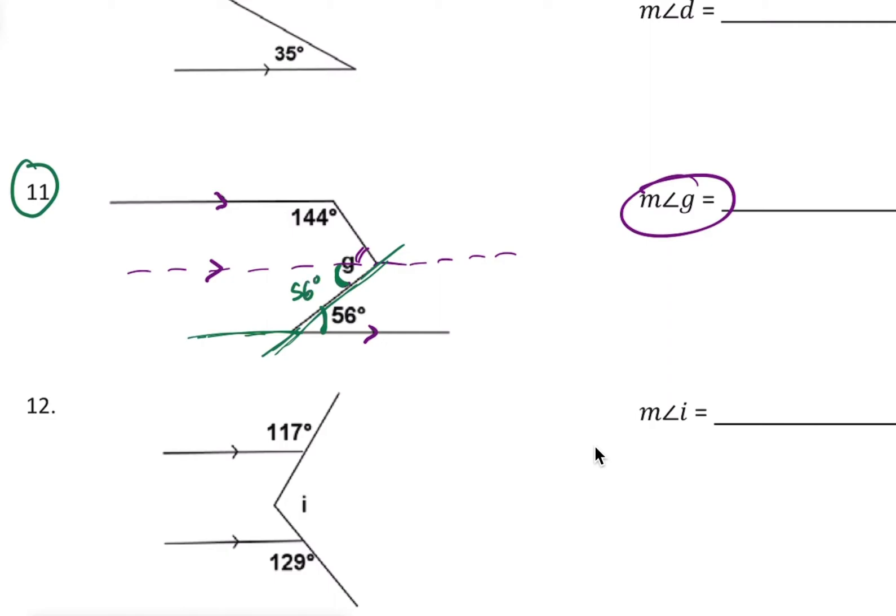Now you should be able to see that also for the other angles. You should be able to see that this line and this line are parallel and we have a transversal right there. That's how this number right here is going to enable us to find out what that angle is.